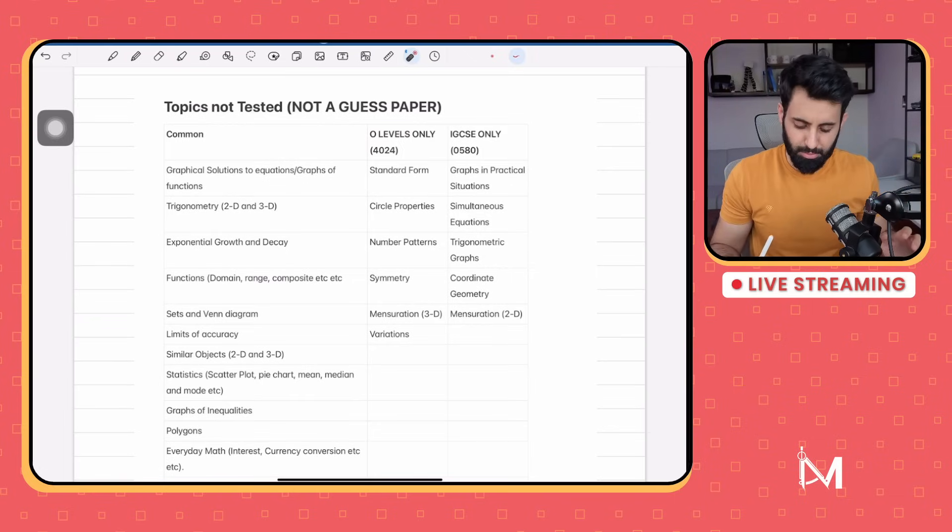You don't have to be too experienced to figure this out - the topics that are tested in one paper are usually not tested in the other paper. For example, if vectors is already tested in one paper, it could be paper one of O-levels or paper two of IGCSE, then chances are it will not be tested in the other paper of O-levels or IGCSE.